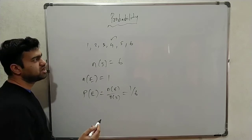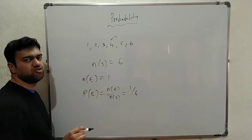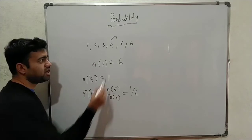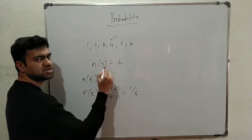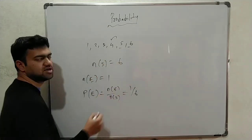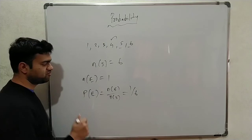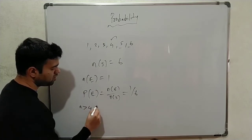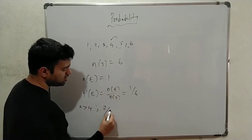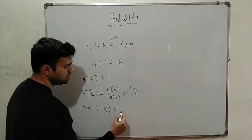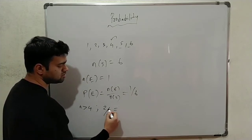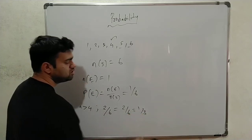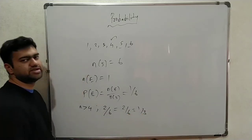Now the condition is the number should be greater than 4. How many possibilities are there? 5 and 6 — so 2 numbers are greater than 4. The number of favorable outcomes is 2, and the total is 6. So the probability is 2 by 6, and if you cancel it, it will be 1 by 3. So there is a 1 by 3 chance.